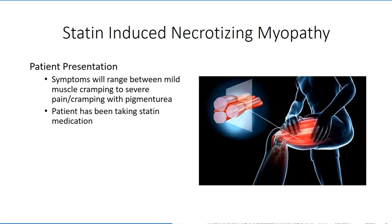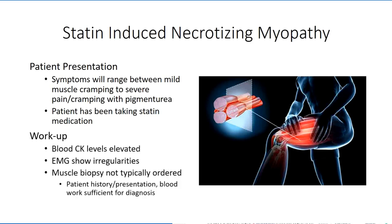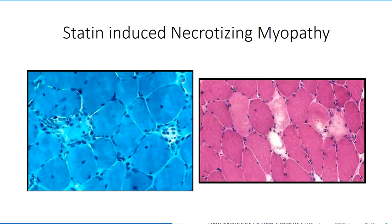The symptoms for statin-induced necrotizing myopathy may range from mild cramping to full-blown rhabdomyolysis. Regardless of the severity, the common thread is a prescription for some form of statin medication, which is identified during the patient history. Blood tests will show elevated creatine kinase levels, and EMG studies will identify abnormal tracings. Muscle biopsies are generally not taken, as the medical findings combined with the patient history are sufficient to make a diagnosis. If biopsy samples are taken, the muscle may demonstrate necrotizing myopathy, as identified through the presence of ghost fibers.